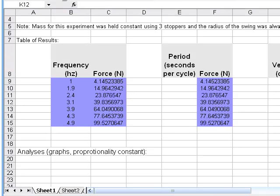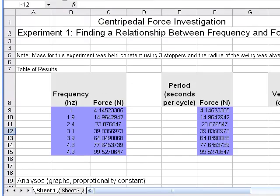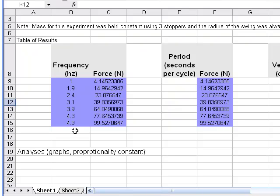And so here's what your Excel spreadsheet looks like. Here's experiment one investigating the relationship between frequency and force. And so the data has been gathered for frequency of rotation and force. There's some notes up here about how much mass was used in each case, as well as the radius. You can determine period from frequency and also because you're given the radius, you can determine velocity as well.